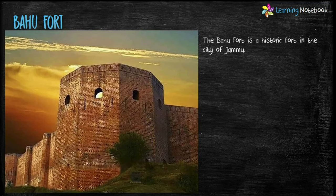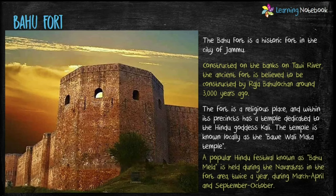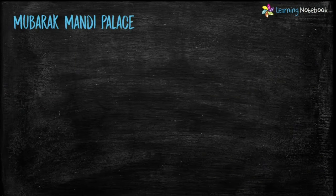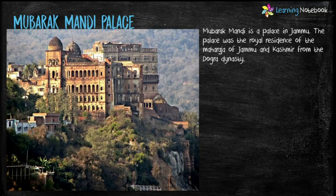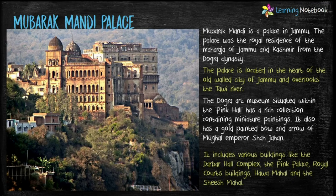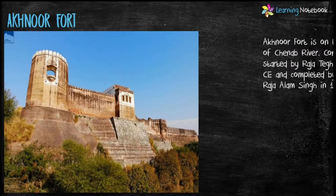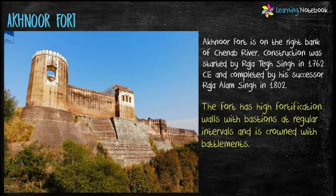Next is Bahu Fort, a historic fort in the city of Jammu; it is a religious place with a temple dedicated to Hindu goddess Kali. Next heritage site is Mubarak Mandi Palace in Jammu, which was the royal residence of the Maharaja of Jammu and Kashmir from the Dogra dynasty. The last heritage place to visit is Akhnoor Fort, located on the banks of river Chenab.